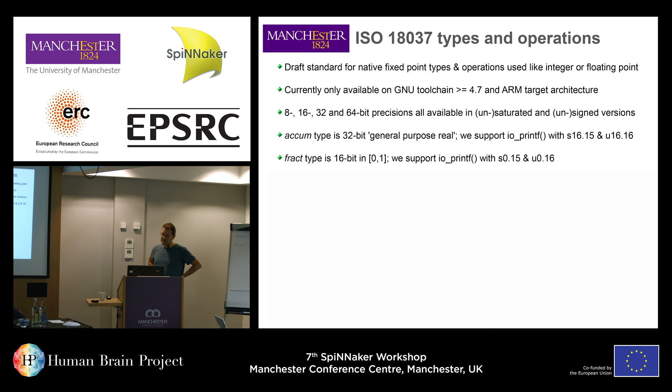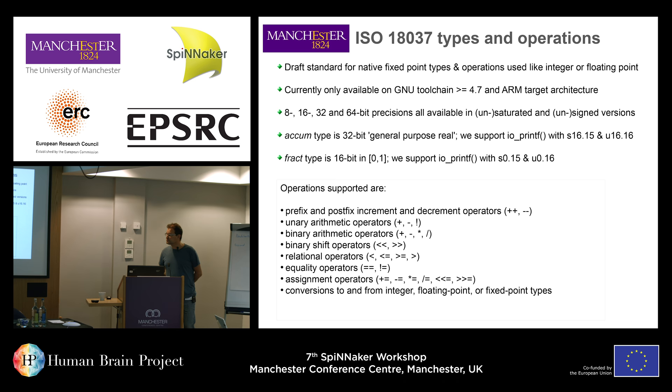The other type we use extensively is called the fract type. The standard fract is 16 bits, representing a value from 0 to 1 — essentially a fraction. You have a signed version with 15 bits of fraction, or an unsigned version with 16 bits. In real use, the long fract, which is the 32-bit version, is actually more useful because you can build macros so multiplies and additions are very easy, and it has twice the precision.